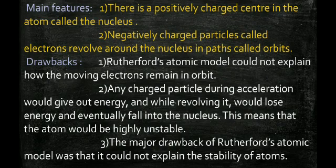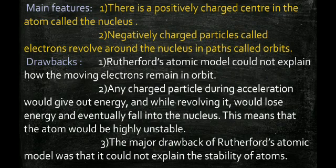Rutherford proposed that electrons revolve around the nucleus in paths called orbits. However, Rutherford could not explain the stability of the atom. If a charged particle rotates, it should continuously lose energy and ultimately fall into the nucleus — which contradicts the fact that atoms are stable. This was the major drawback of the Rutherford model.